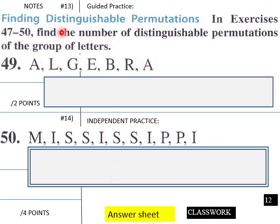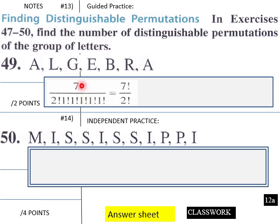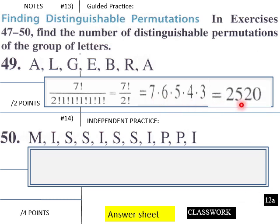Let's try one now. Find the number of distinguishable permutations of the group of letters in 'algebra' — this one is for students. Looking at 'algebra', we have seven letters, so we start with 7 factorial. We have two A's, and then one each of L, G, E, B, and R. So it'd be 7 factorial over 2 factorial. That calculation comes out to 2,520 ways of rearranging the letters in 'algebra'.